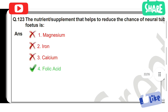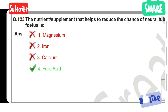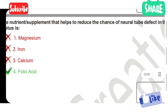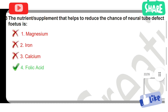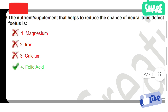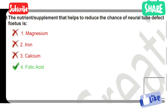The nutrient or supplement that helps to reduce the chance of neural tube defect in the fetus: Option 1: Magnesium. Option 2: Iron. Option 3: Calcium. Option 4: Folic acid. Folic acid is the correct answer.